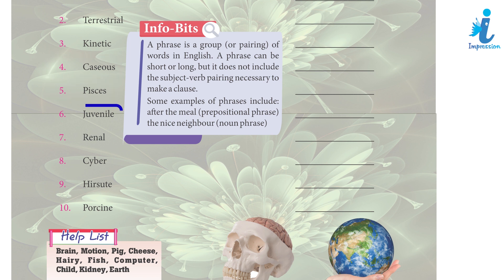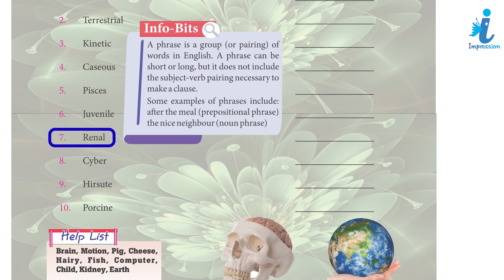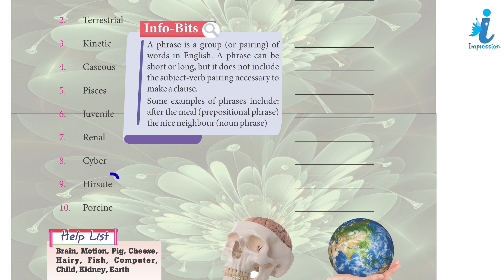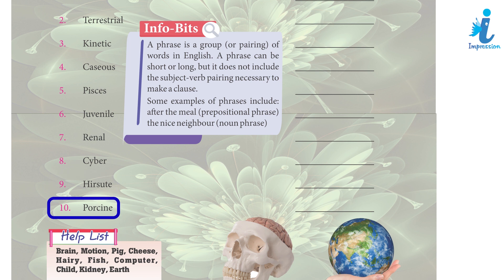6. juvenile — child, 7. renal — kidney, 8. cyber — computer, 9. hirsute — hairy, 10. porcine — pig.